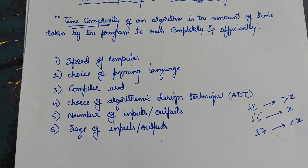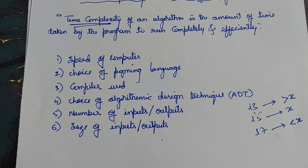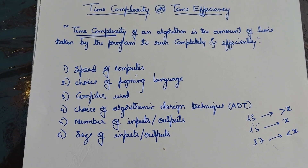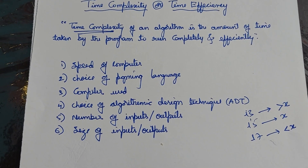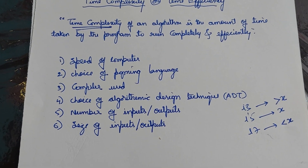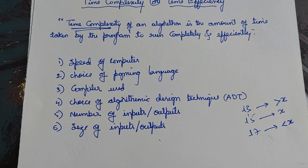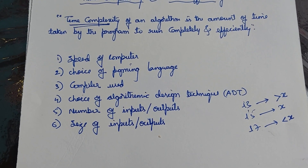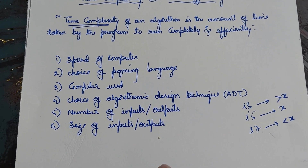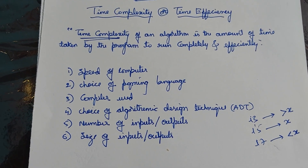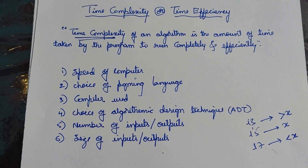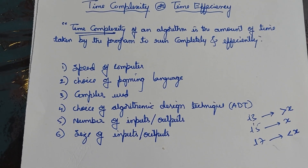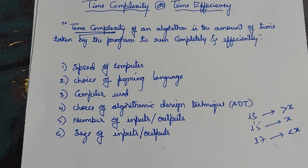The second factor is choice of programming language — what type of programming language we are using, whether C, C++, Java, Python, .NET, or any other language we are using to convert our algorithm into an executable program.